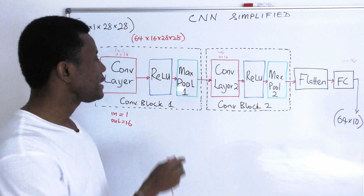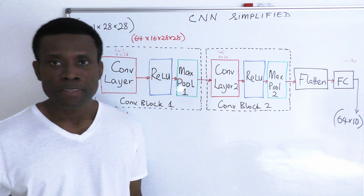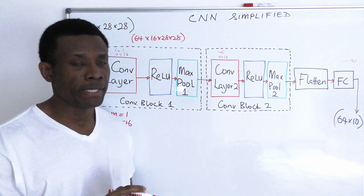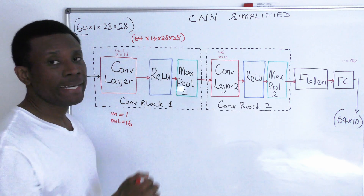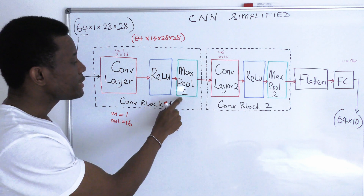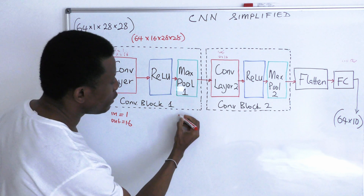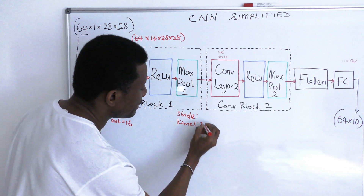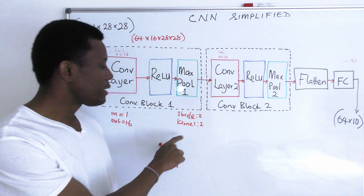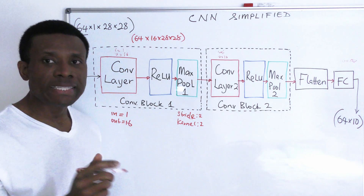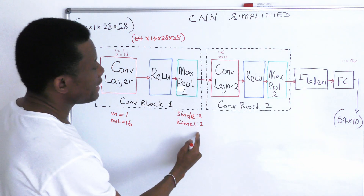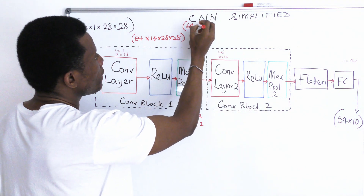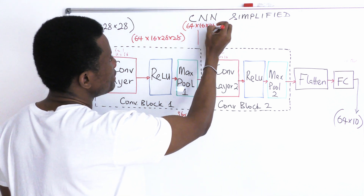The next layer is the max pooling layer. The max pooling layer in a convolutional neural network is used to reduce the spatial dimension of the image — in this case from 28 by 28 to a lower dimension. The properties that perform this change are the stride and the kernel, and in this example they are both 2. With a stride of 2 and a kernel of 2, the width and height of the image are reduced by half, giving us a dimension of 64 by 16 by 14 by 14.